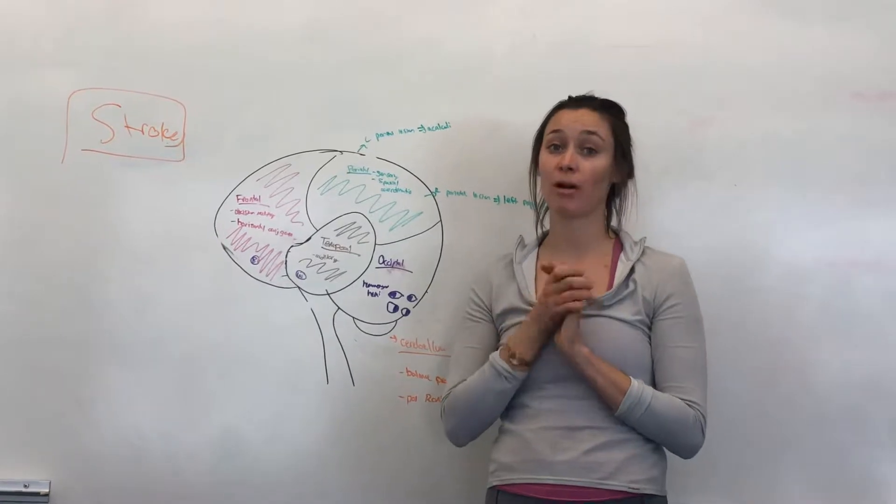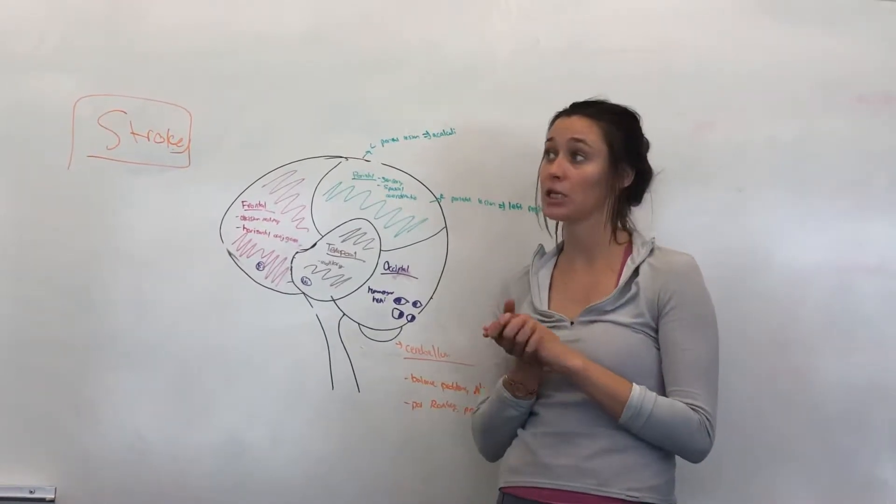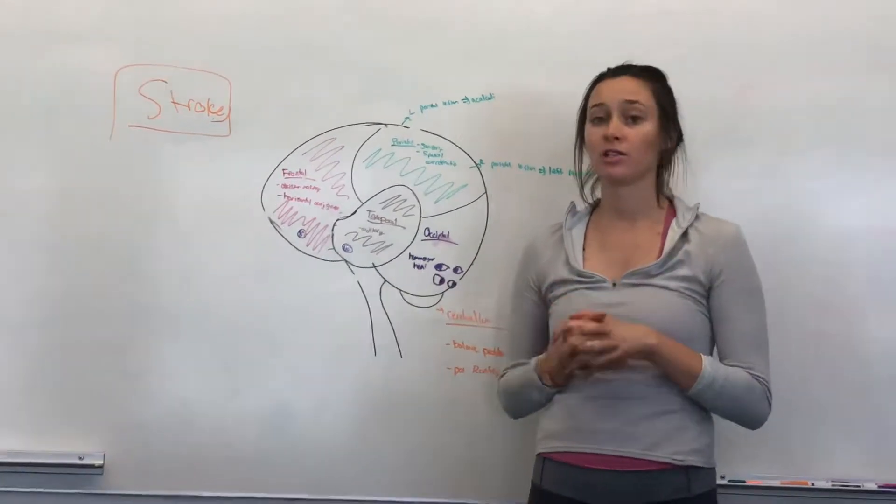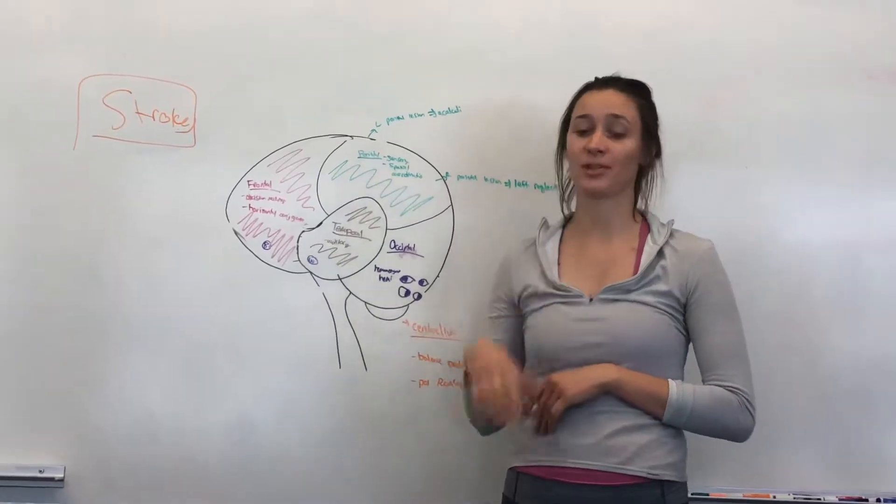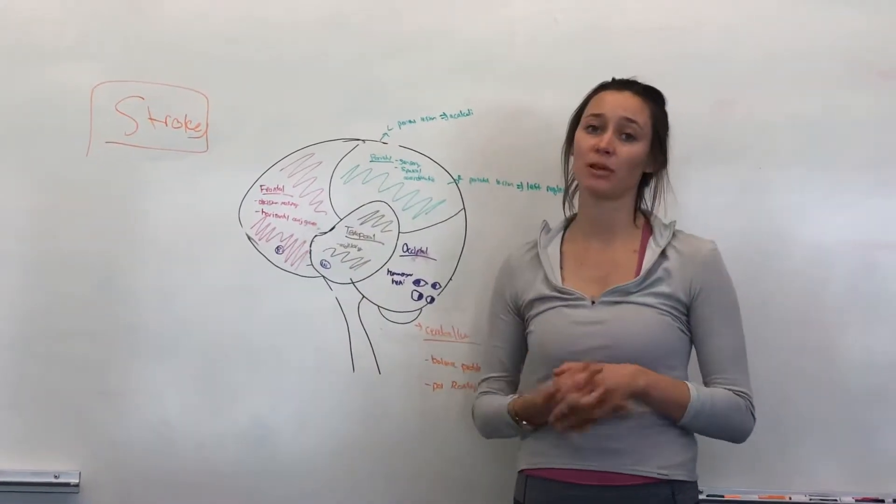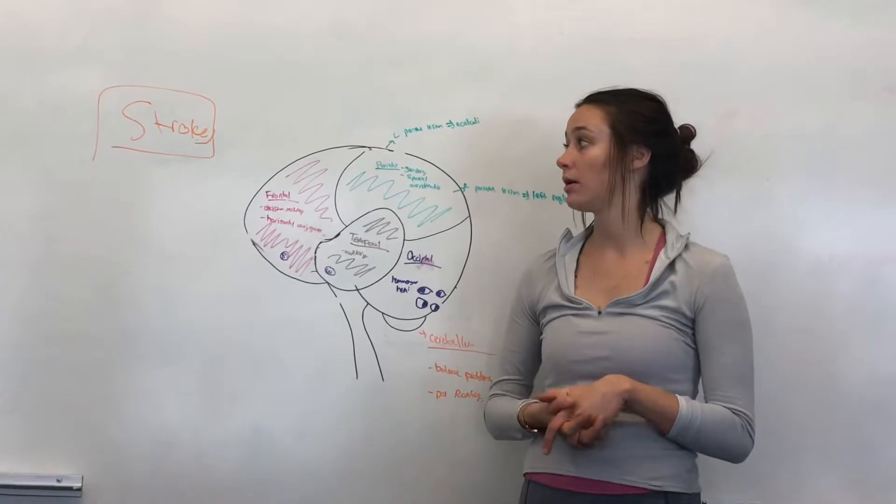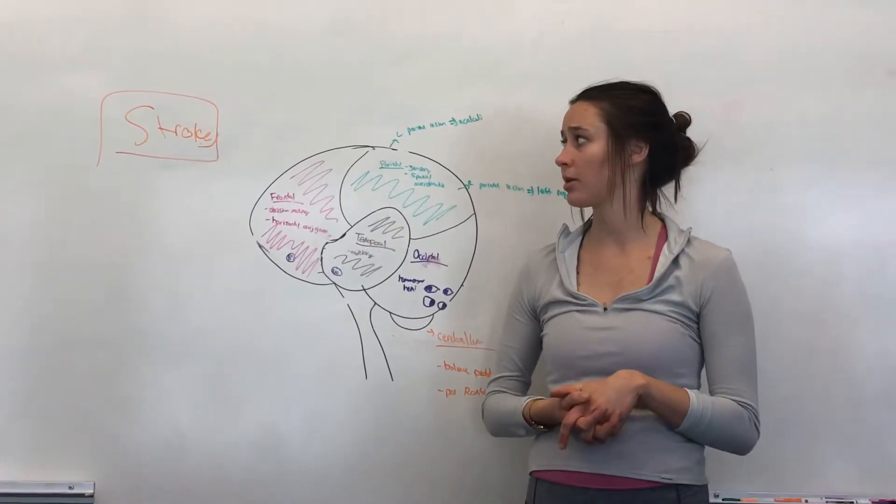And then note within ischemic strokes, there's thrombotic or embolic stroke. So a thrombus is just a clot, whereas an embolus is a clot that's moving from another location. So I think embolic strokes are probably more common.